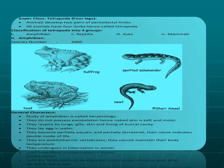Tetrapoda means four legs — tetra means four, poda means feet or legs. These animals develop two pairs of pentadactyl limbs. Penta means five, dactyl means digits, meaning each pair of limbs has five fingers or digits. All animals with four limbs are therefore known as tetrapods.